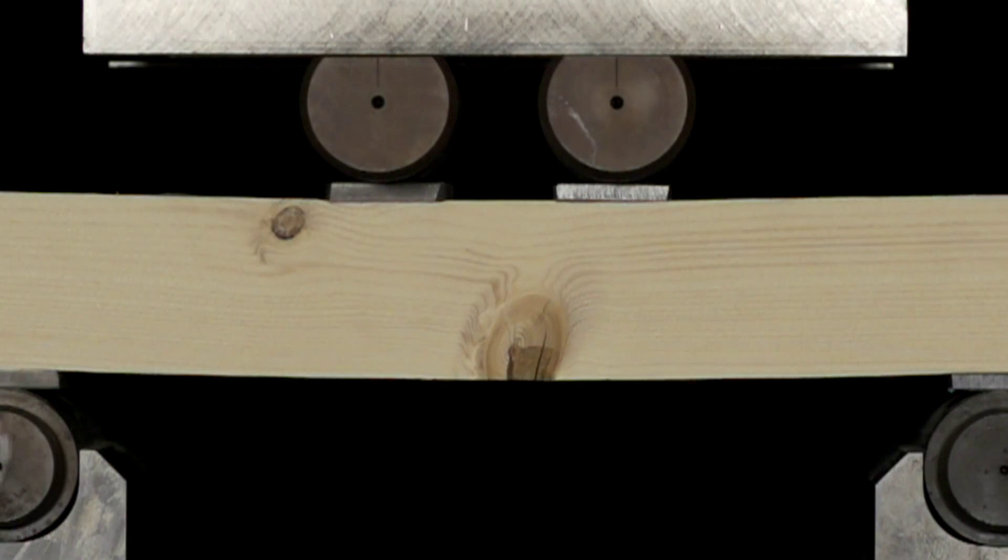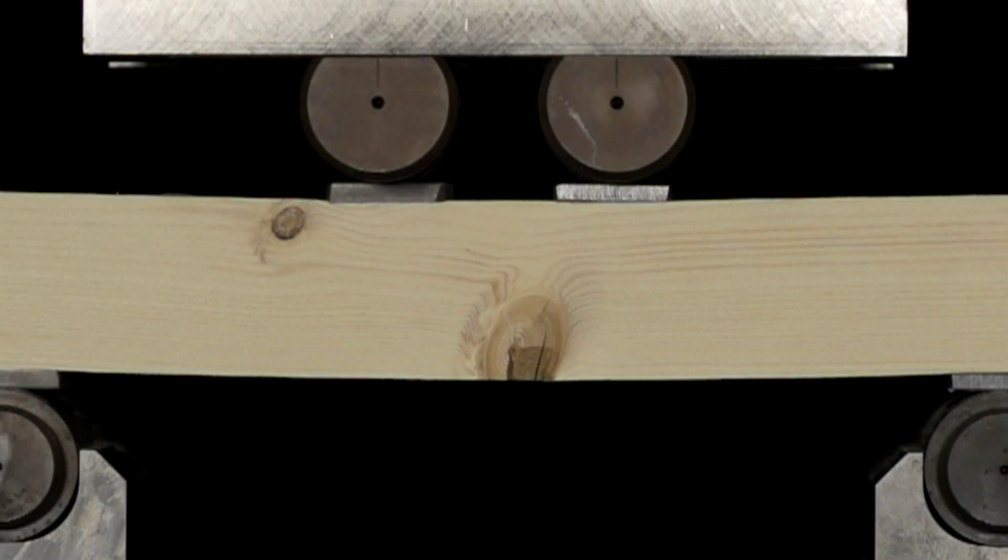Now, if we slow down the footage, we can see cracks appearing first in the knot before splitting failure occurs above the knot.